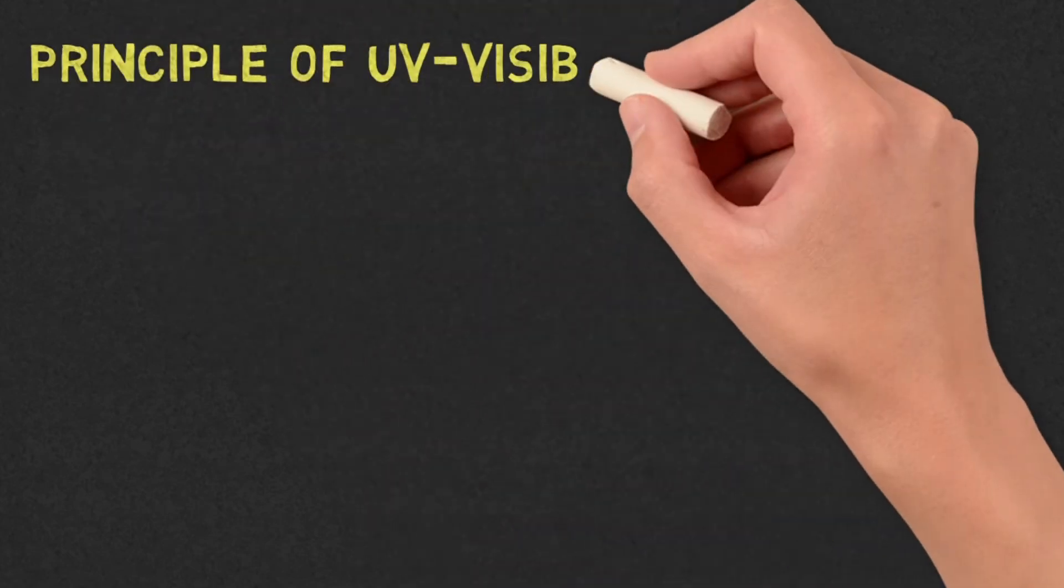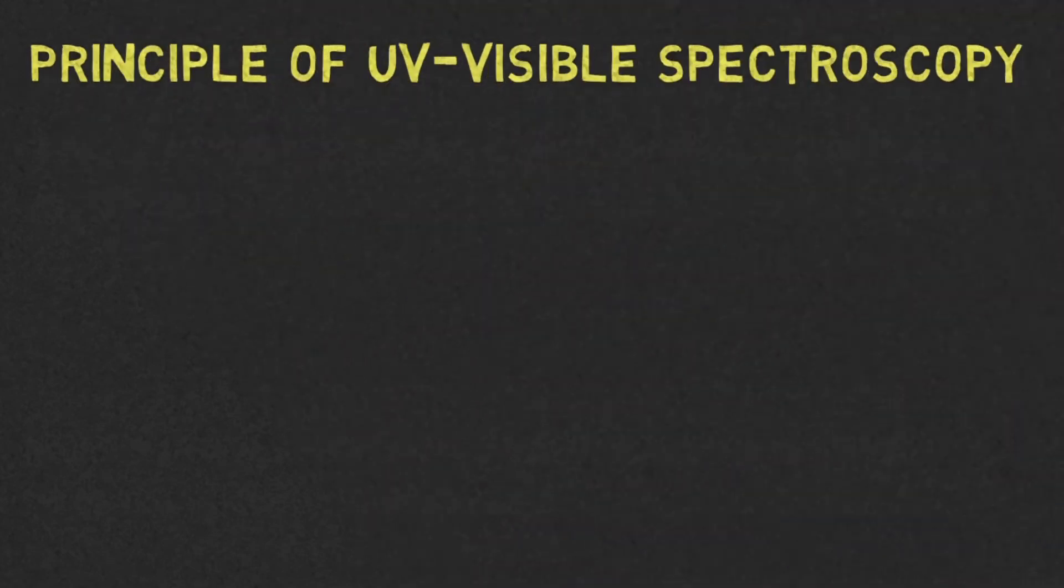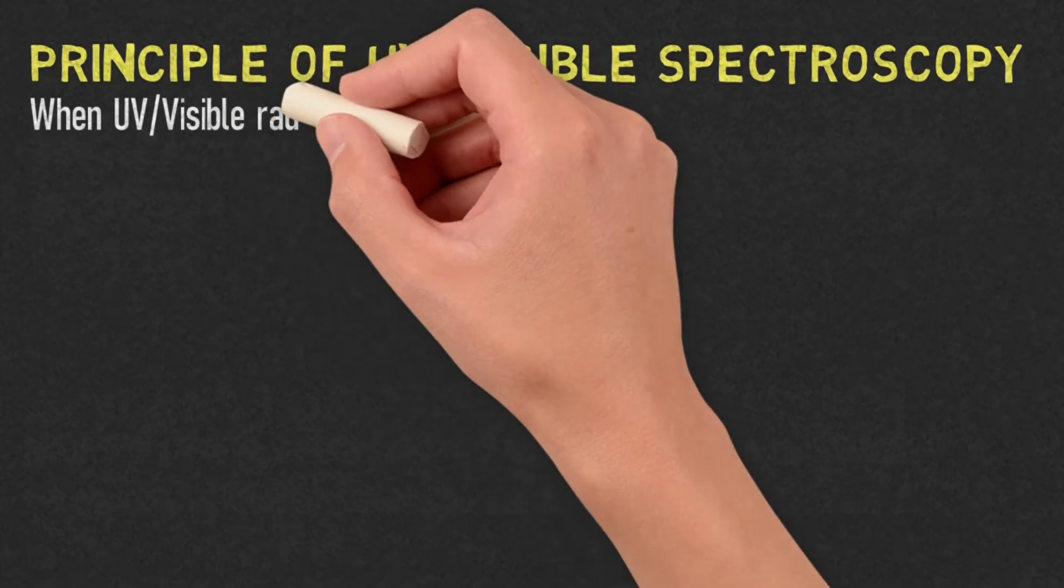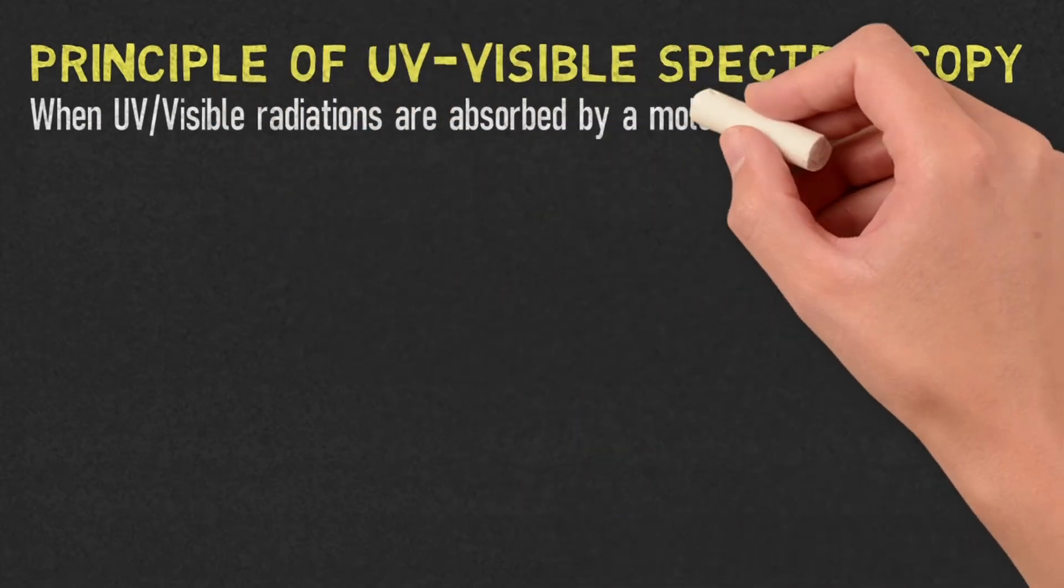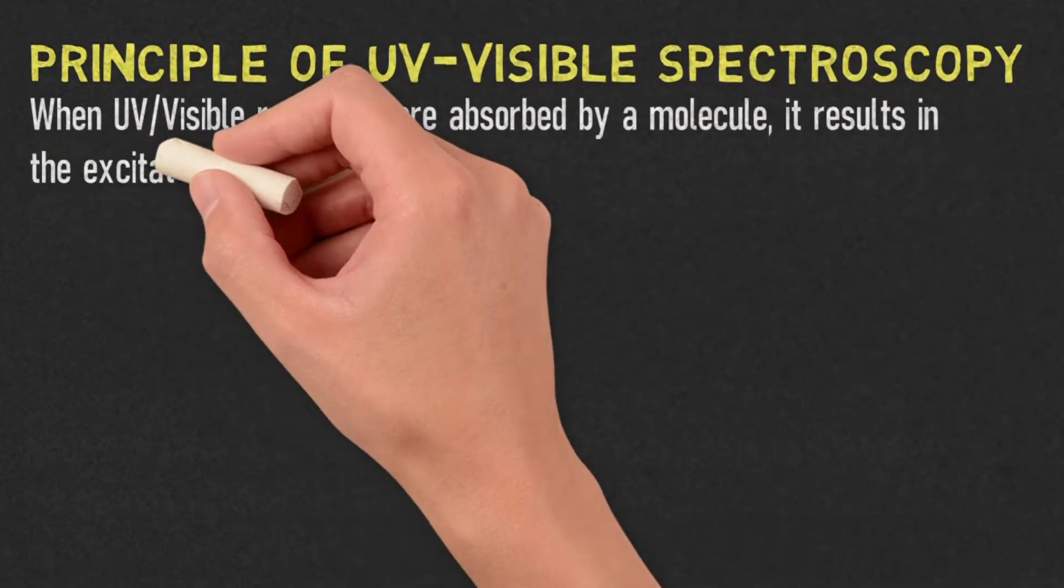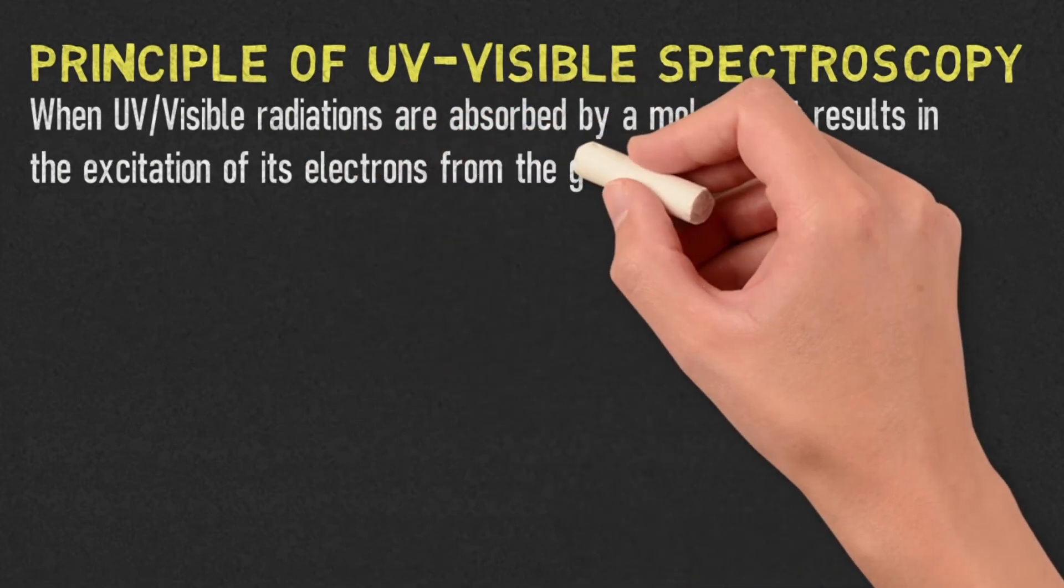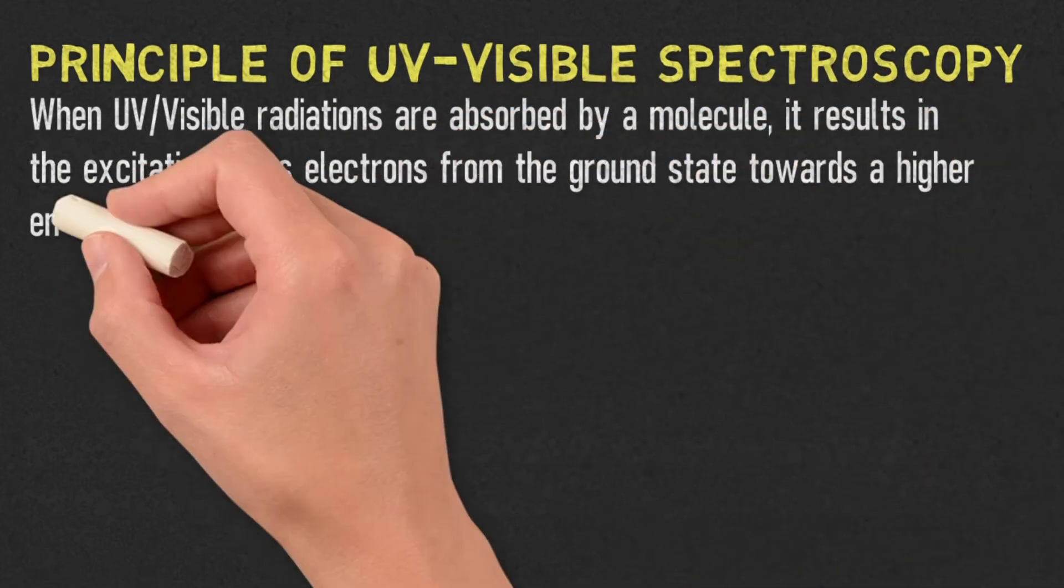Now let us learn about the principle of UV-visible spectroscopy. When UV or visible light radiations are absorbed by a molecule, it results in the excitation of its electrons from the ground state towards a higher energy state.